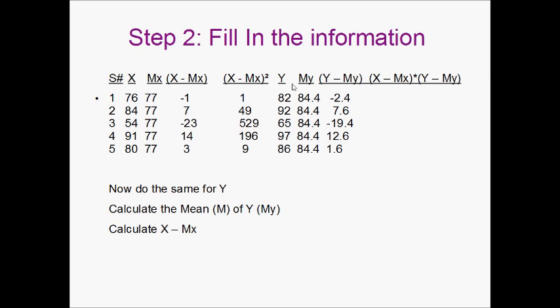Then we're going to take our Y minus the mean of Y. 82 minus 84.4 is negative 2.4. 92 minus 84.4 is 7.6. So on for each of these.